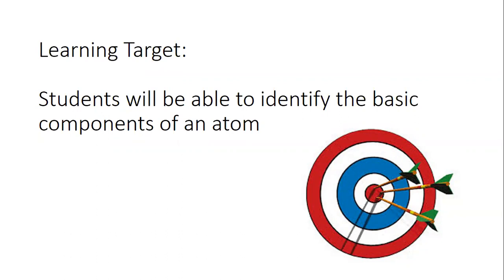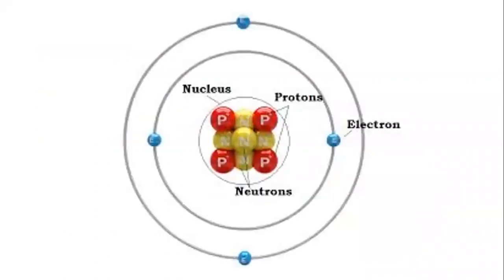As tiny as an atom is, it consists of even smaller particles: protons, neutrons, and electrons, as shown here. Now keep in mind that these are not drawn to scale.